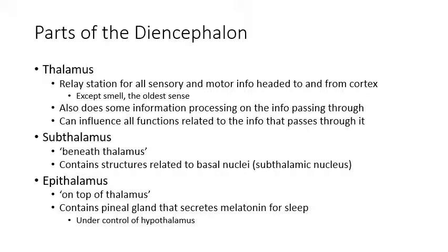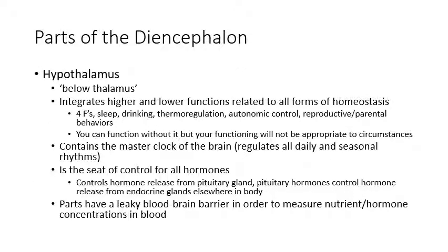The epithalamus is on top of the thalamus and contains the pineal gland, which secretes melatonin — the hormone that allows you to sleep. The secretion of melatonin from the pineal gland is controlled by the hypothalamus, which is the last part of the diencephalon. The hypothalamus is below the thalamus and below the subthalamus, and its role is to integrate your higher and lower functions and to control hormones.